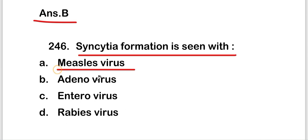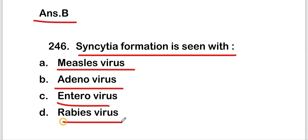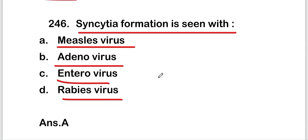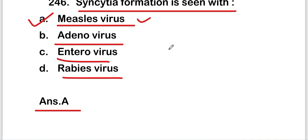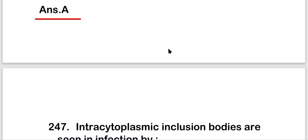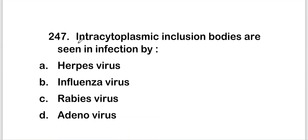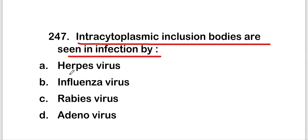The next question: syncytia formation is seen with measles virus, adenovirus, enterovirus, or parvovirus? The right answer is option A — measles virus. Syncytia formation is seen with measles virus.